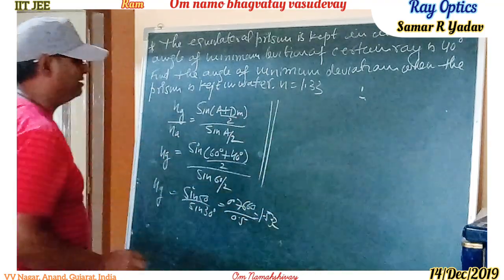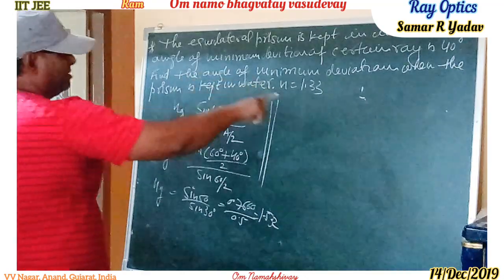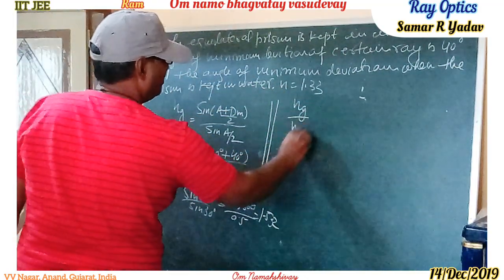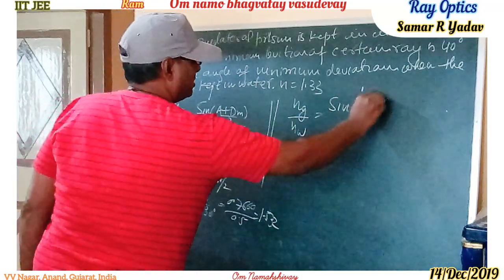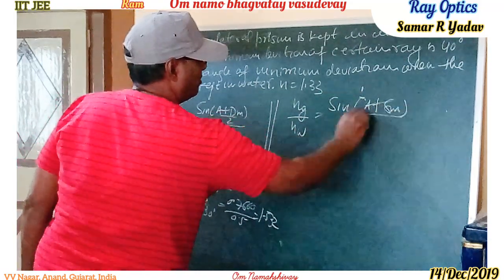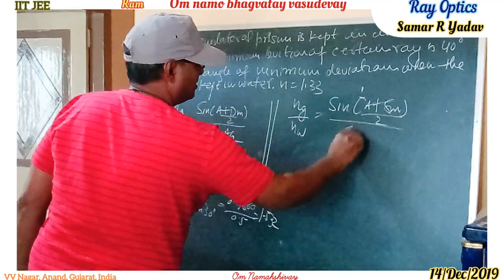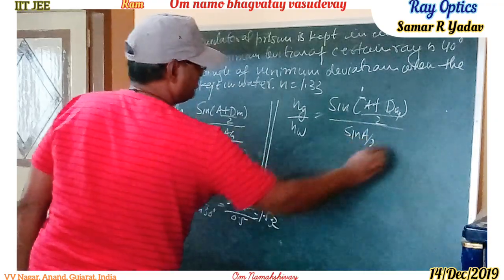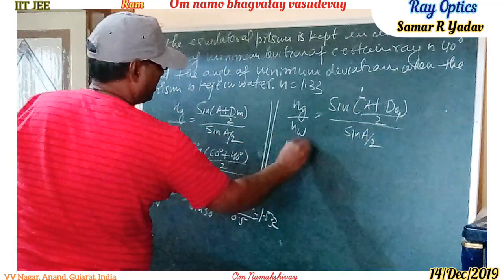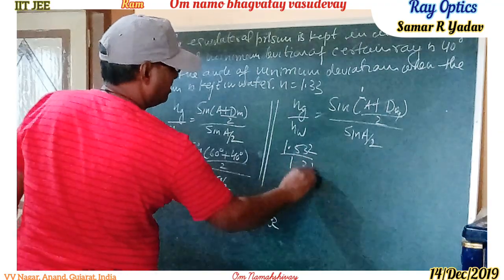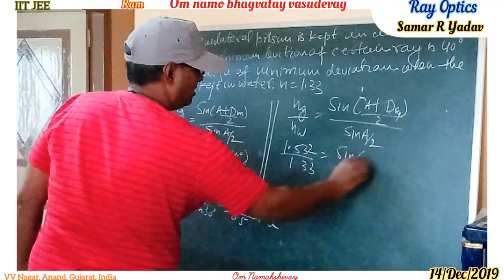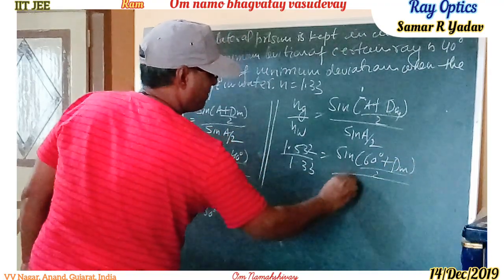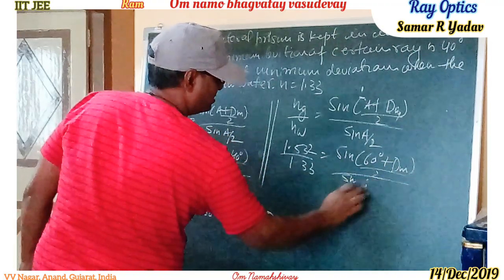Next, when the prism is placed into the water, we can write: μ_g upon μ_w is equal to sin((A + δm) / 2) upon sin(A / 2). That is 1.532 upon 1.33 is equal to sin((60) / 2), meaning sin(30°) = 0.5.